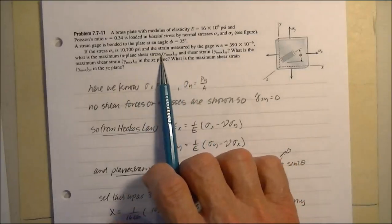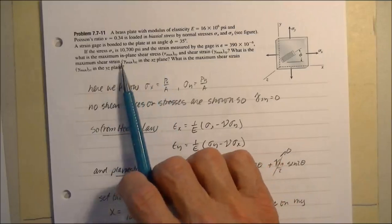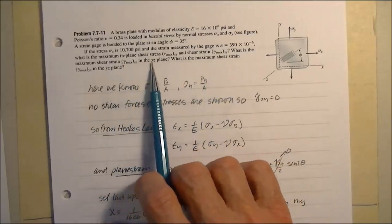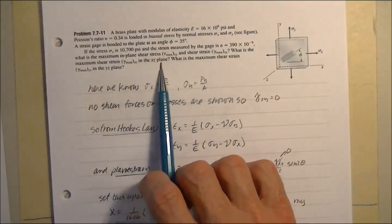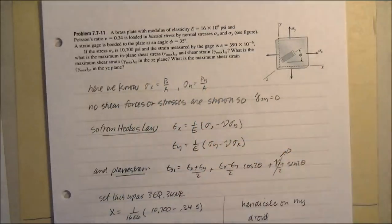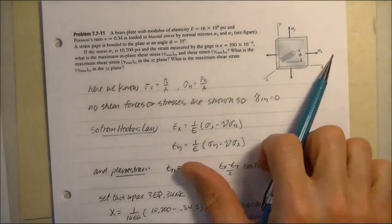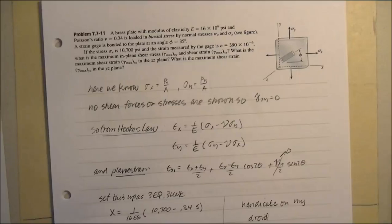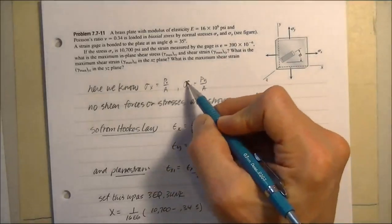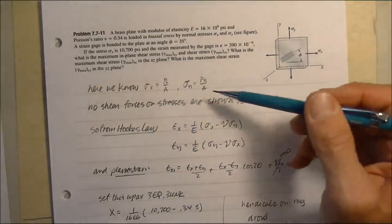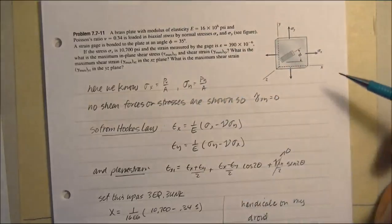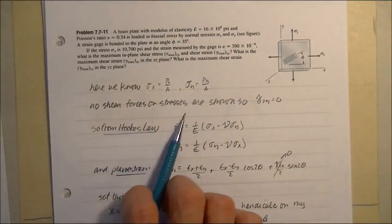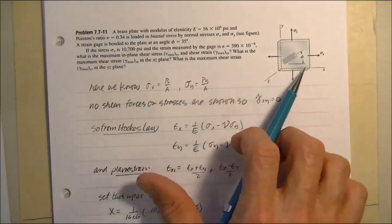We know that sigma x equals the force over area in that direction, and sigma y from its direction. There's no shear here, so no shear stresses and no shear deformation — no gamma on that face. From the Hooke's law equations, the strain in x is related to the stresses in x and y, the strain in y is related to the stresses in y, and from the plane strain transformation equation along the diagonal line, we get another relationship. The cosine 2-theta term uses the known 35-degree angle, and the shear strain term again goes to zero since there's no shear stress shown.